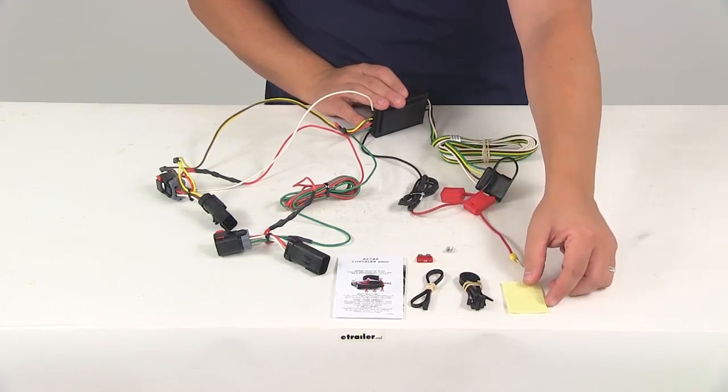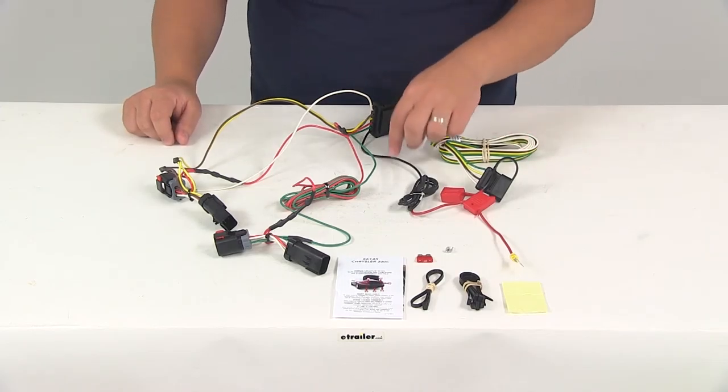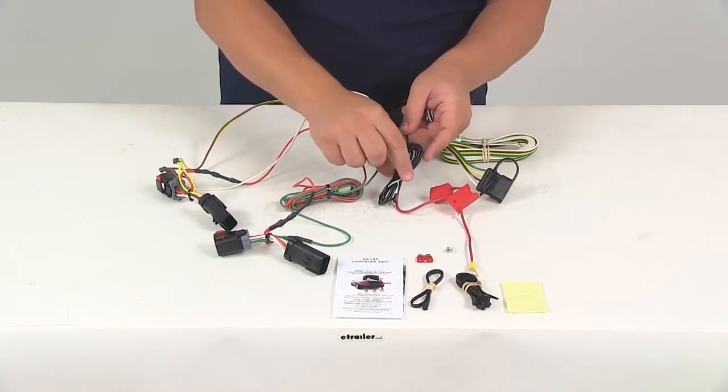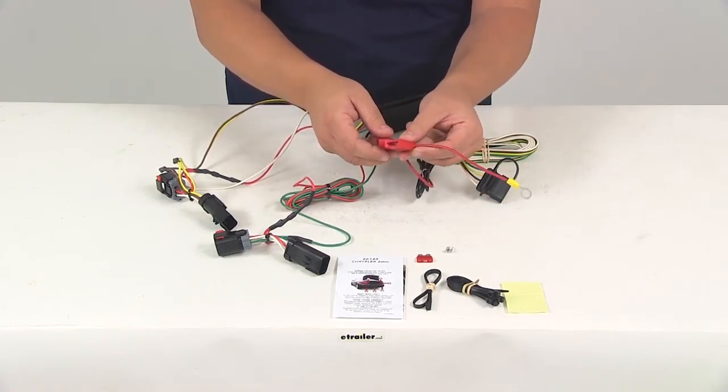The next step is going to be to run the hot lead to the fuse panel. That's going to be located near the vehicle battery. Your hot lead is going to be the black wire. It's bundled up right here and it's going to have the red fuse holder already connected to it.